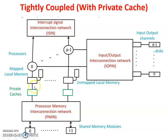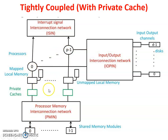In the tightly coupled with private cache diagram, the difference is that private caches are added with each processor — from P0 up to Pn-1. Any data a processor wants, it directly accesses from its private cache, and the remaining portions of the architecture are the same as before.